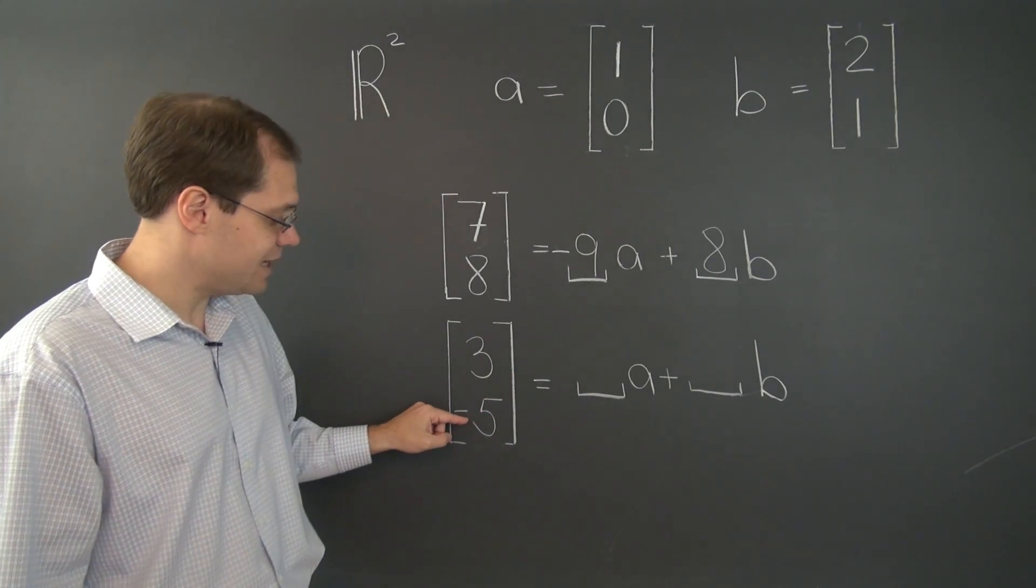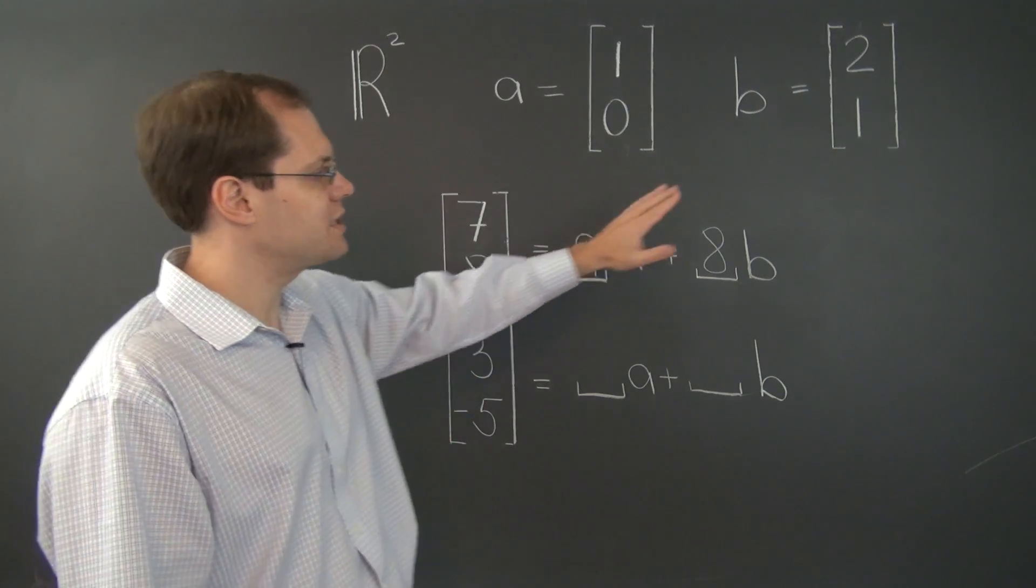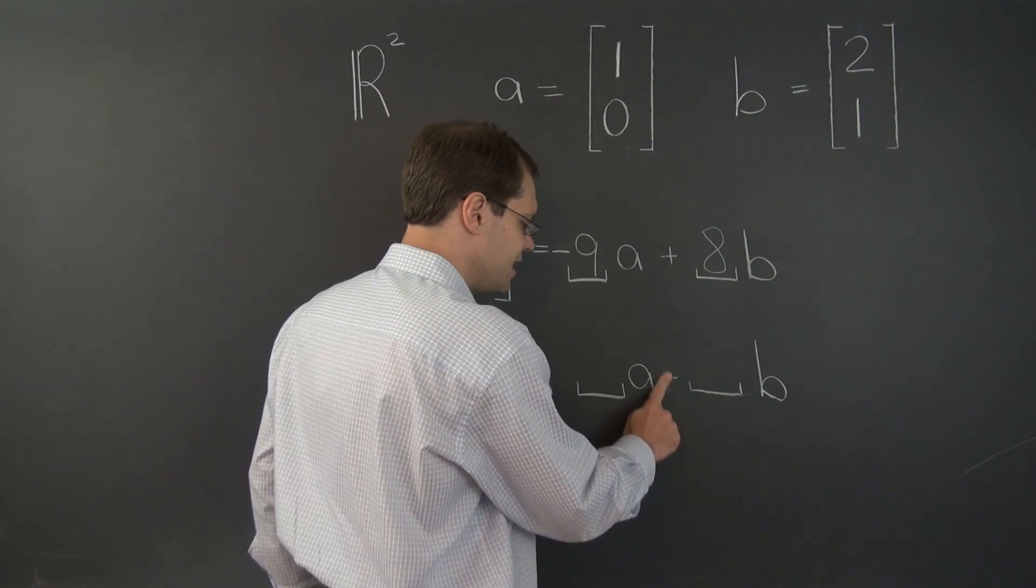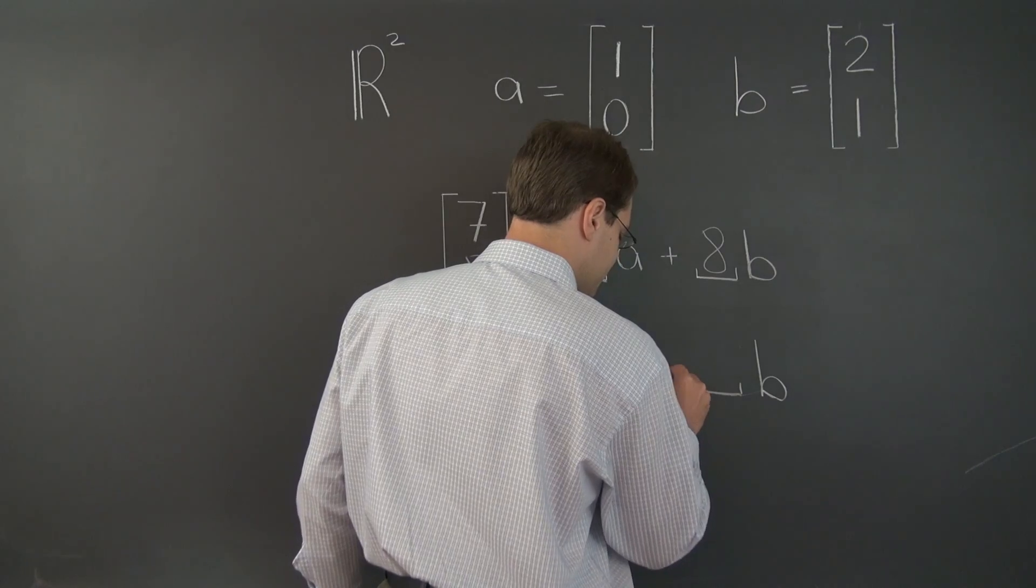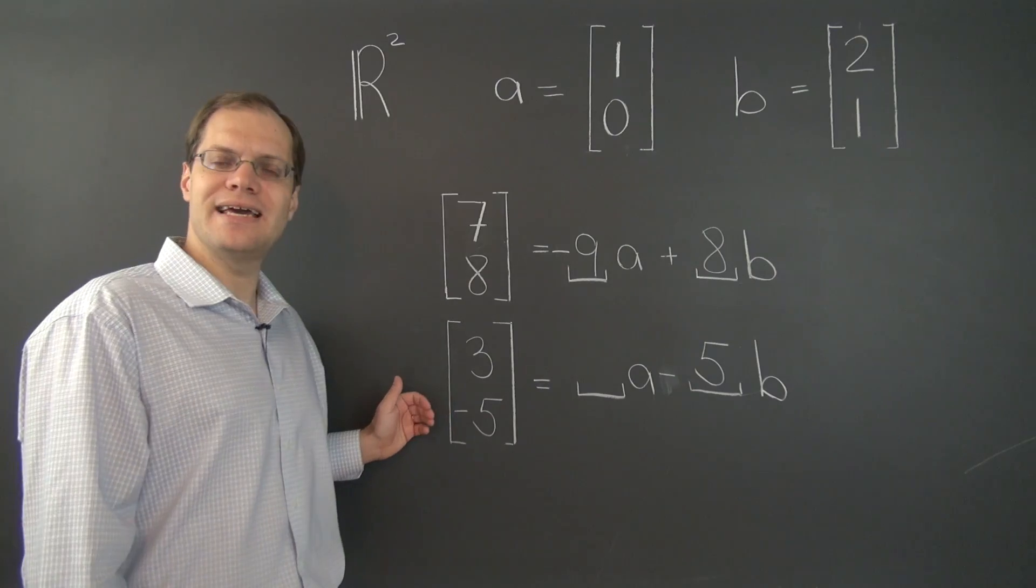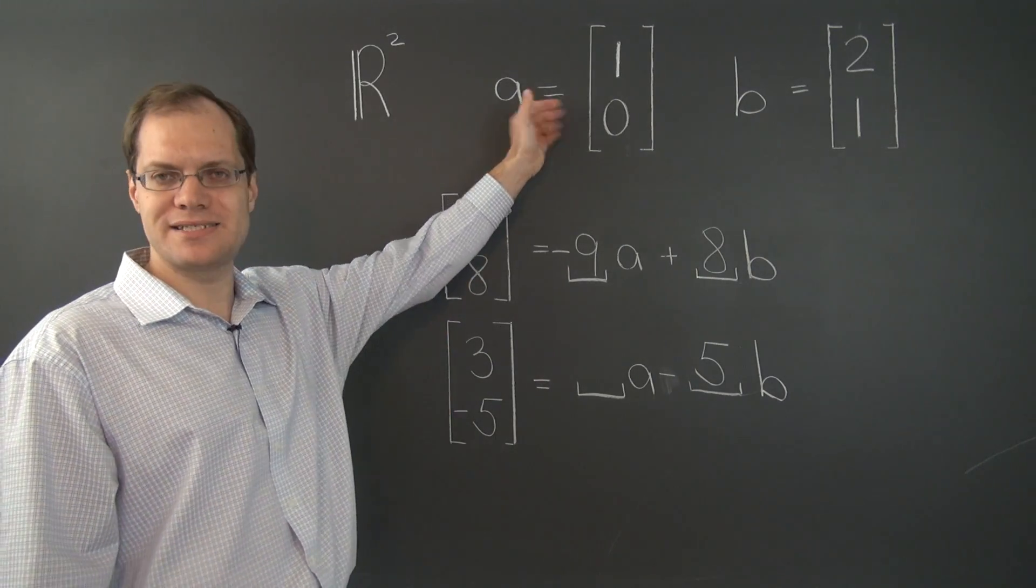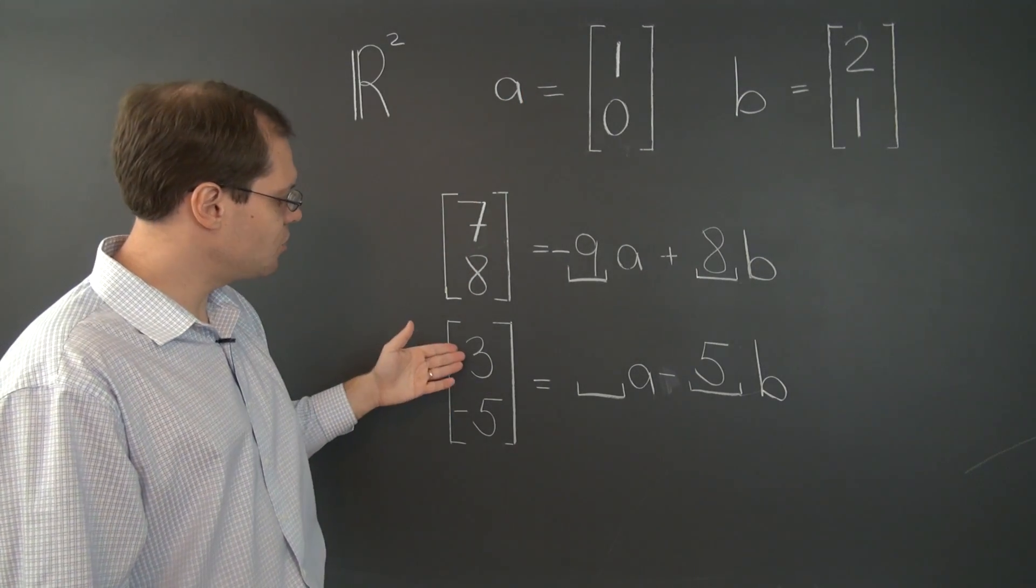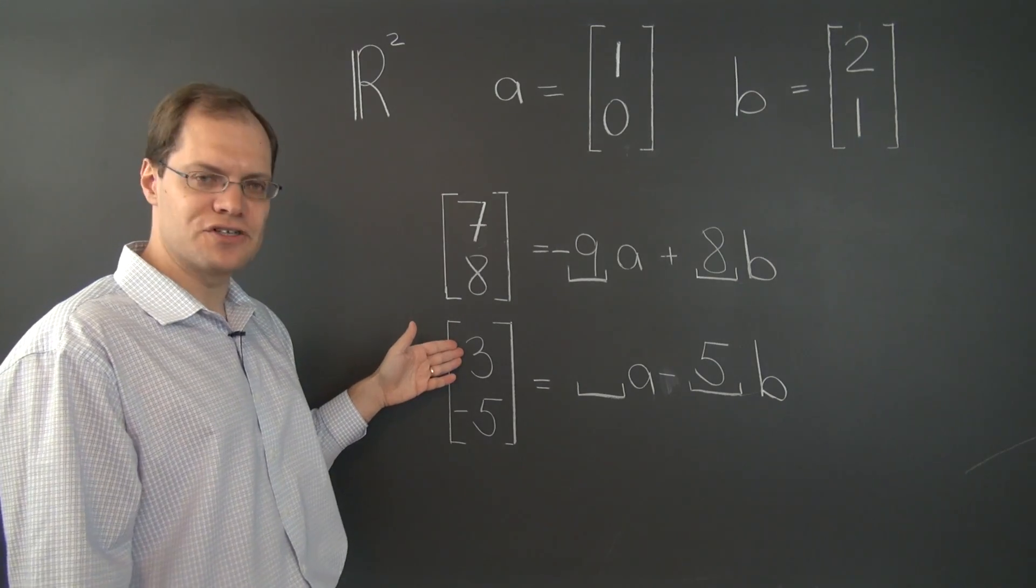Here we go. We need to match the entry of negative 5 first with the help of B. So we'll take negative 5 of B. The second entry is all taken care of, and it will not be messed up by the vector A.